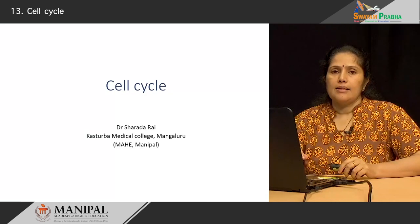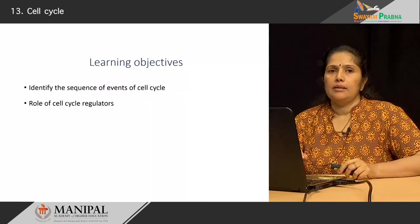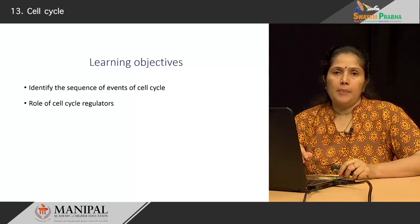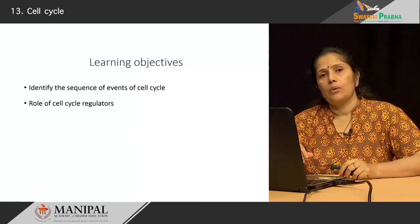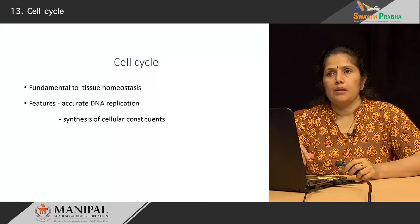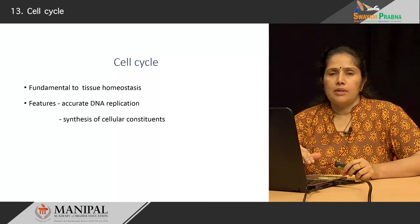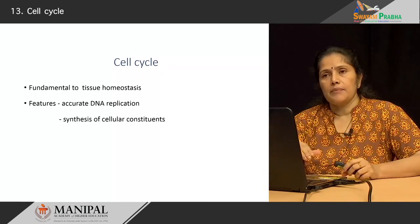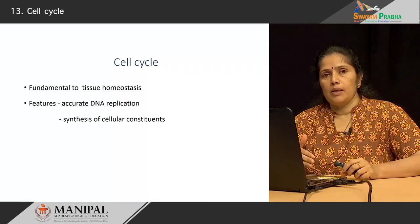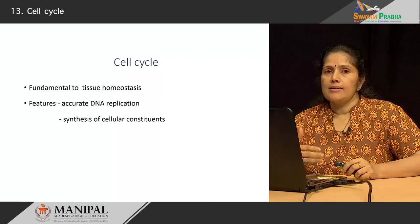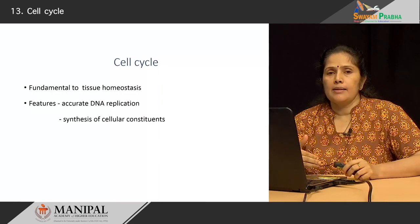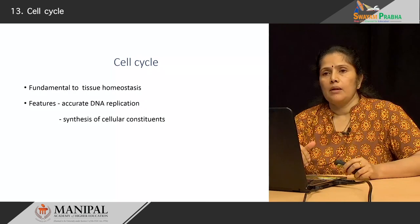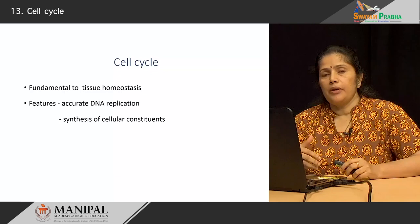Today we will be looking at the cell cycle and we will try to identify the sequence of events that are a part of the cell cycle and we will also look at the role of some of the cell cycle regulators. The cell cycle is an extremely fundamental process for normal tissue homeostasis — the way a cell survives within a body, the way new cells replace old dead cells when cells die is all a function of the cell cycle. It has certain very important and interesting features.